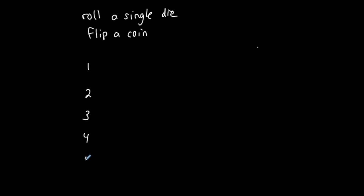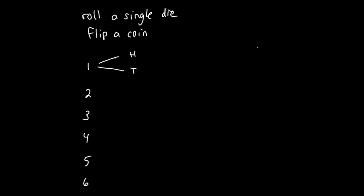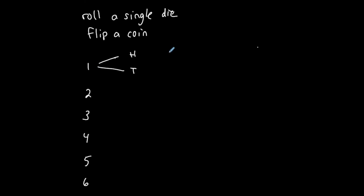If I roll the die first, the possible outcomes are one, two, three, four, five, or six. Then I also want to flip a coin, so I'll get either heads or tails. If I get a one on the die, two situations can happen when I flip the coin: I can get heads or tails. So my complete outcomes so far are: one and heads, or one and tails.